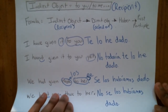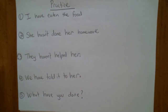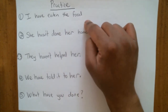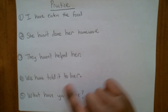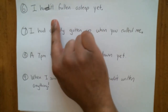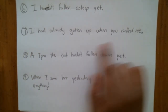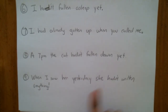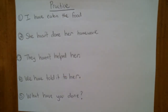Now let's have some practice. I've got nine problems for you to work on — pause the video and try them. One: I have eaten the food. Two: She hasn't done her homework. Three: They haven't helped her. Four: We have told it to her. Five: What have you done? Six: I hadn't fallen asleep yet. Seven: I had already gotten up when you called me. Eight: At 7 p.m., the cat hadn't fallen down yet. Nine: When I saw her yesterday, she hadn't written anything.